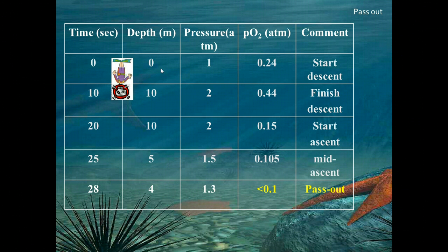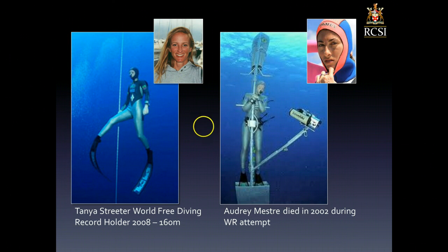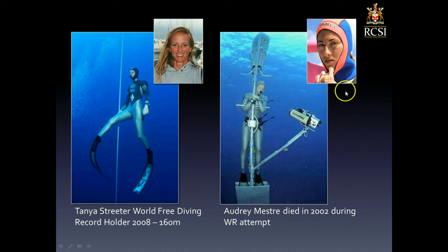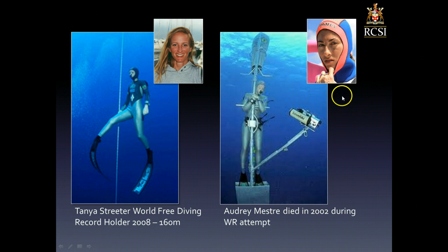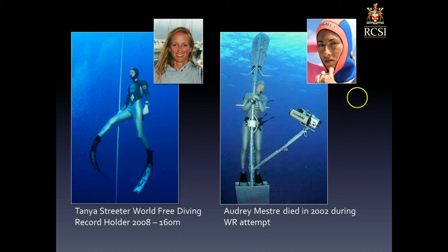Two world-famous freedivers illustrate this danger. Audrey Mestra died in 2002 during a world-record freediving attempt from shallow water blackout — she lost consciousness in the last 10 metres of her return to the surface and never recovered, suffering convulsions underwater. Tanya Streeter is a current world freediving champion. These two divers show that even with extensive training, there is no guarantee against shallow water blackout. People with a competitive psychological profile are most at risk because they tend to stay down longer, use up more oxygen, and are therefore at higher risk on their return to the surface.